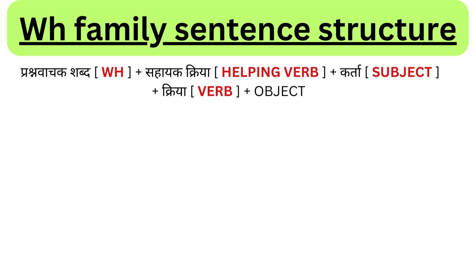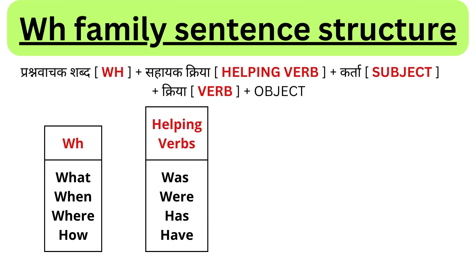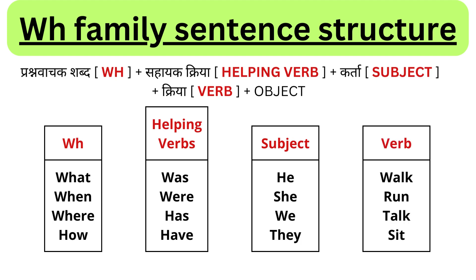Helping verb means words used to ask questions. WH family words are: what, when, where, how. Helping verbs are: was, has, have. Subjects are: he, she, we, they. Verbs are: walk, run, talk, sit. If you ask any question in English, you will use this sentence structure with WH family words.